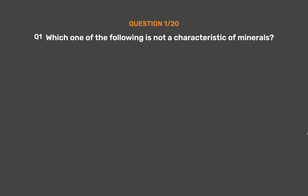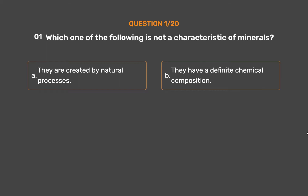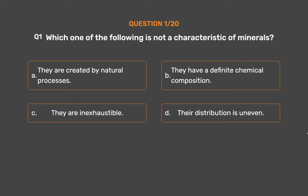Question 1: Which one of the following is not a characteristic of minerals? Option A: They are created by natural processes. Option B: They have a definite chemical composition. Option C: They are inexhaustible. Option D: Their distribution is uneven.